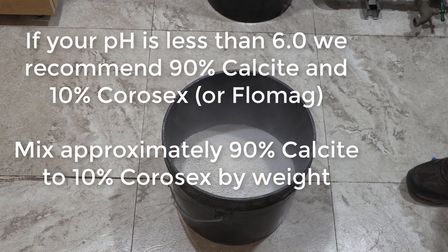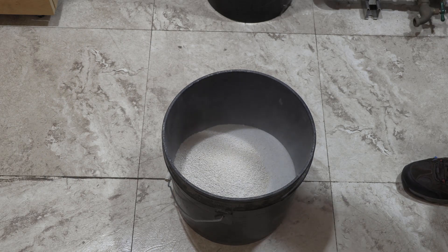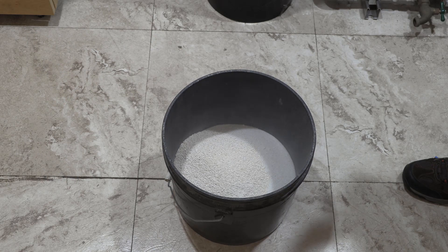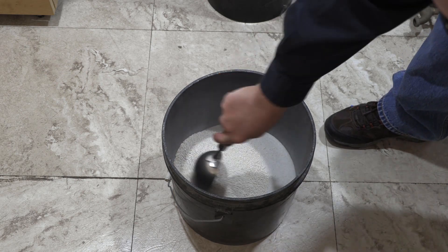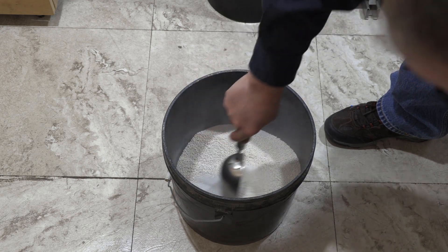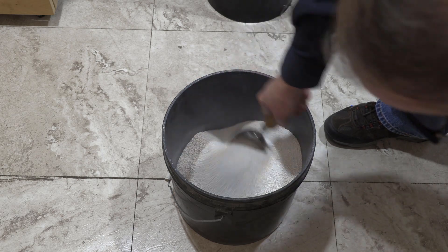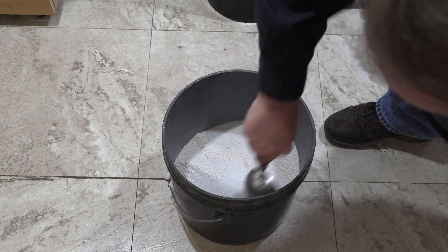And also, you may want to wear a dust mask when you do this for real. It definitely puts a lot of dust in the air. What you want to do is go ahead and pre-mix this up and get the Corosex worked into the calcite.